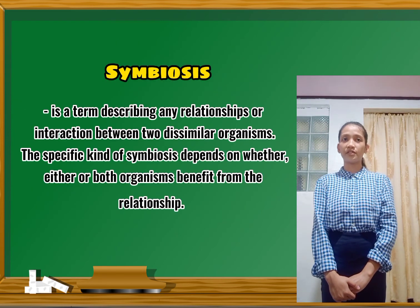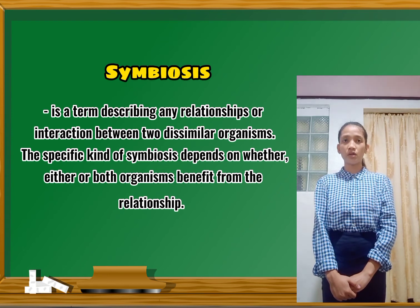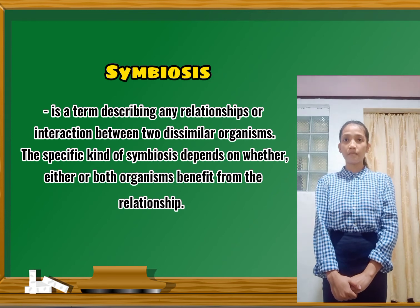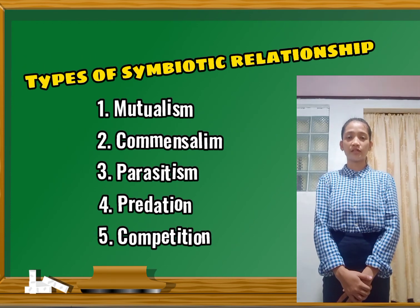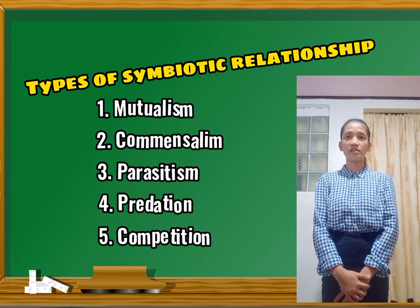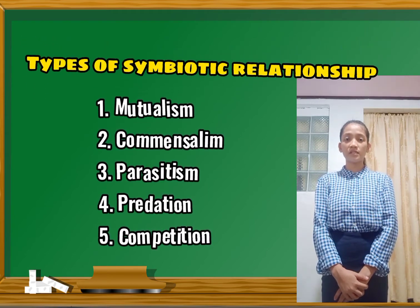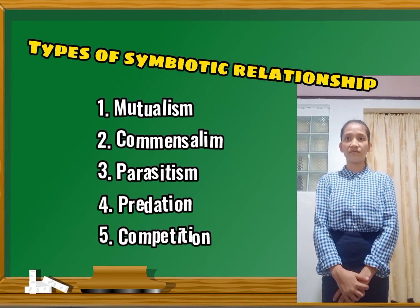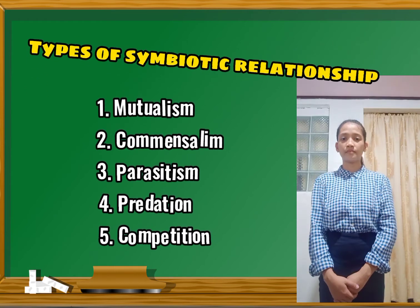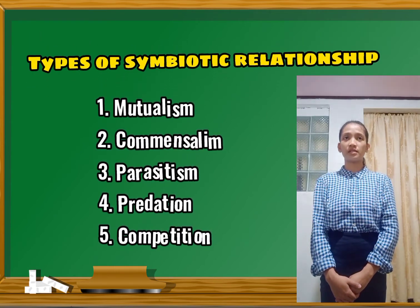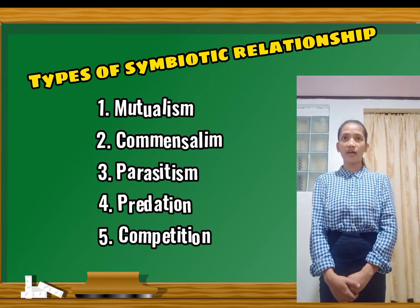Symbiosis is a term describing any relationship or interaction between two dissimilar organisms. The specific kind of symbiosis depends on whether either or both organisms benefit from their relationship. There are types of symbiotic relationships. First, mutualism — a symbiotic relationship in which both species benefit. Second, commensalism — a symbiotic relationship in which one species benefits while the other species is not affected. One species typically uses the other for a purpose other than food.